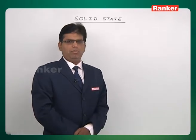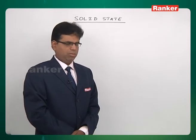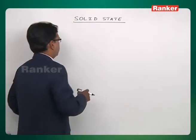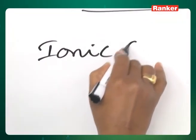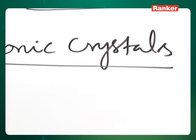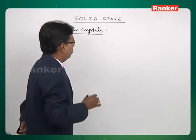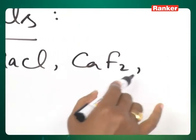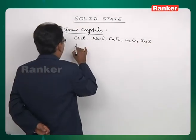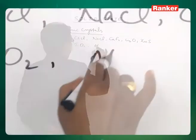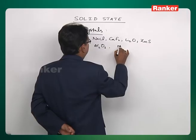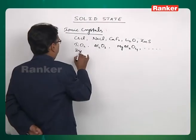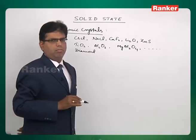Now, the structures of ionic crystals we have to discuss. Different types of ionic compounds will exist in different types of crystalline structures. In this we discuss about the crystalline structures of cesium chloride, sodium chloride, calcium fluoride, lithium oxide, zinc blend, rutile, Al2O3, perovskite, diamond — all these most common examples.